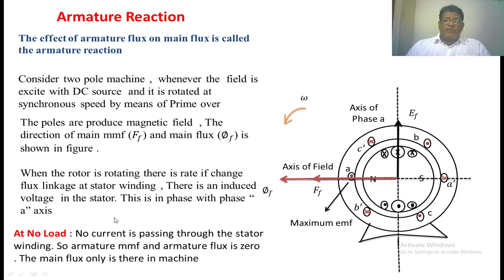Now we are going to see the phasor diagram of the armature. At no load, there is no current passing through the stator winding, so there is no armature flux and no effect of armature flux.